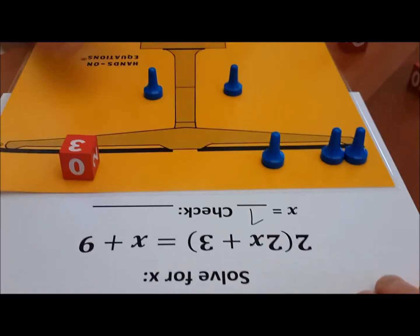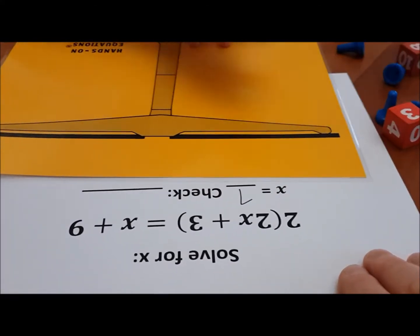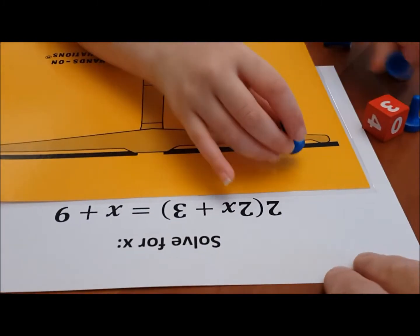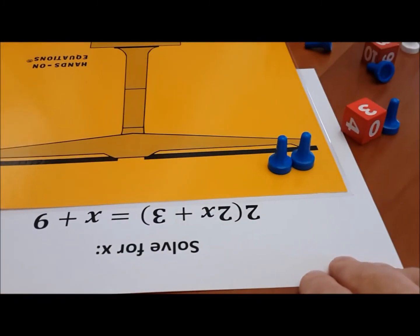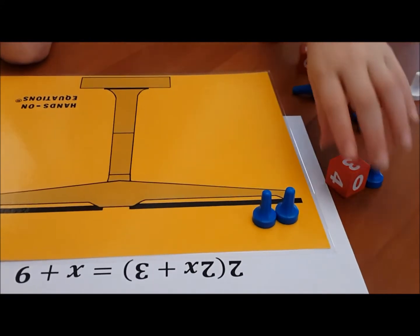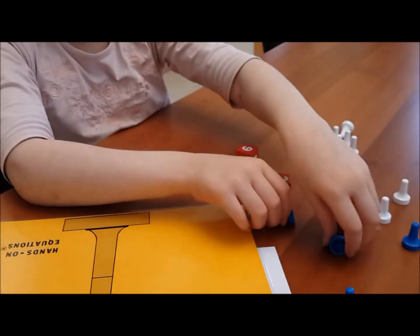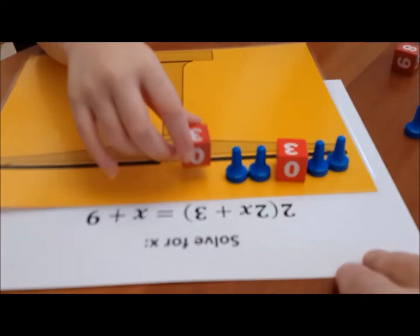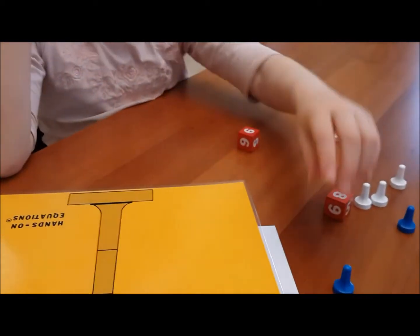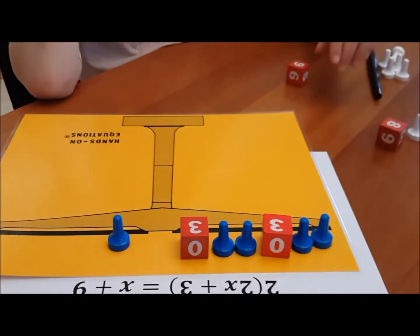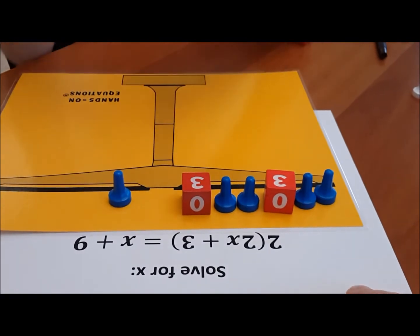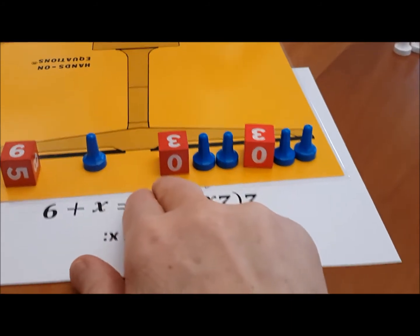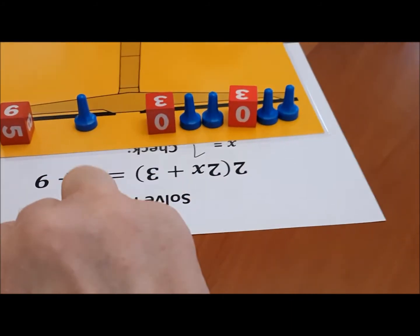Now let's clear the scale in order to do the check. And let's set up the original problem one more time. So you have 2 x's plus 3. And we're going to do that a second time. And on the other side we have x plus 9. Good.